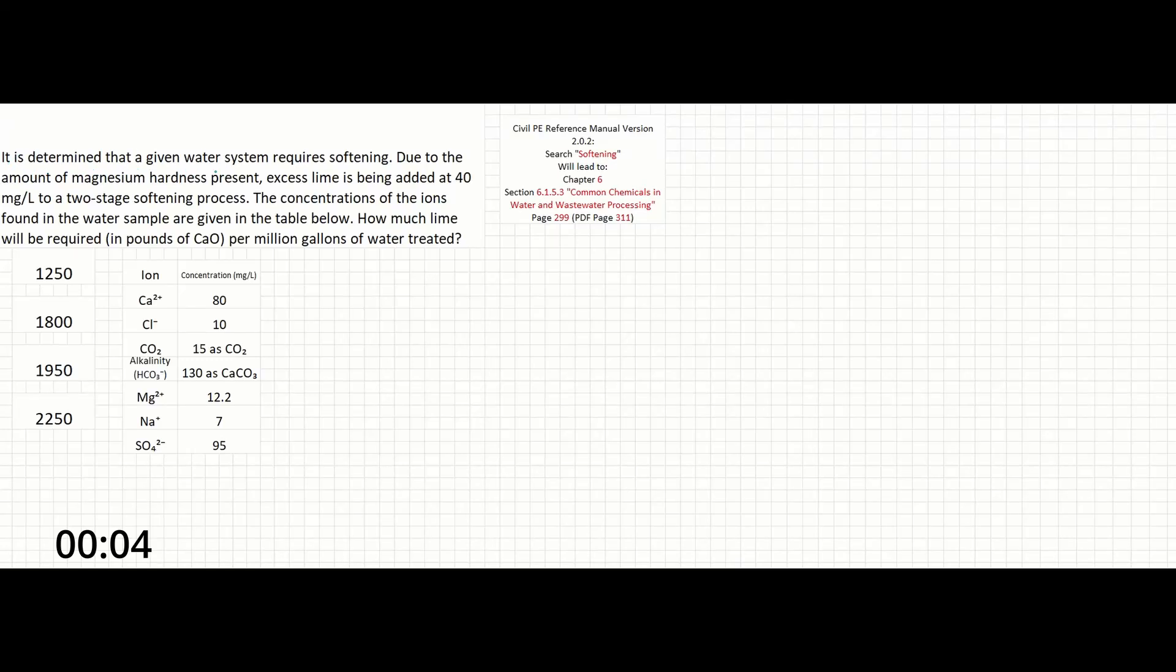It is determined that a given water system requires softening. Due to the amount of magnesium hardness present, excess lime is being added at 40 milligrams per liter to a two-stage softening process. The concentrations of the ions found in the water sample are given in the table below. How much lime will be required in pounds of CaO per million gallons of water treated?